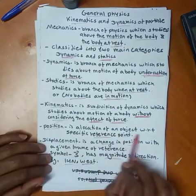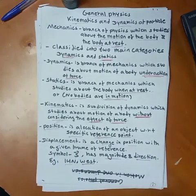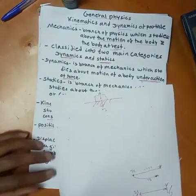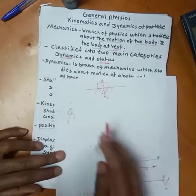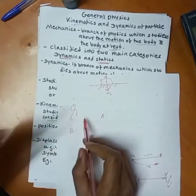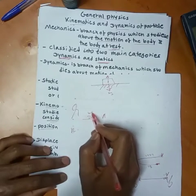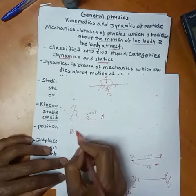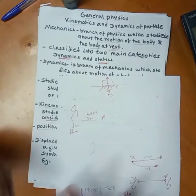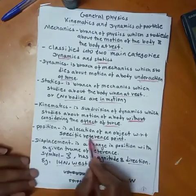Position is the location of an object with respect to a specific reference point. We have a specific reference point, and the position describes where the object is located relative to that reference point.